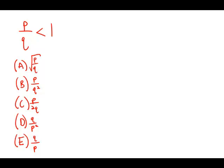If P over Q is less than 1 and P and Q are positive integers, which of the following must be greater than 1? If P over Q is less than 1, what that means is that P is less than Q. P is the relatively smaller number and Q is the relatively larger number, so we have small over big, less than 1.